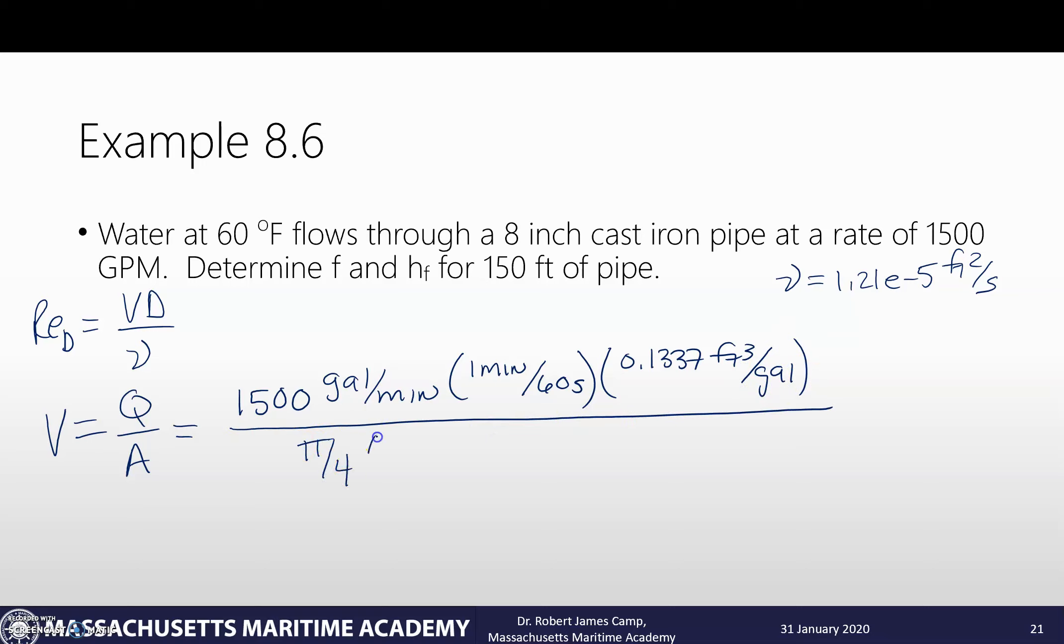Pi over 4, 8 divided by 12. That puts it in feet squared. Looking at all the units, minutes cancel, gallons cancel, we're left with cubic feet per second and feet squared. So feet per second. We calculate that out. We're running at a velocity of 9.6 feet per second.